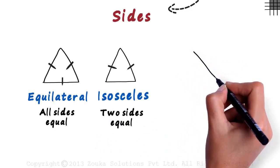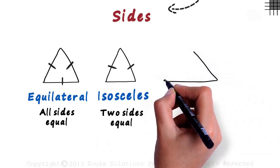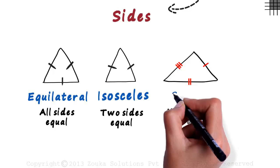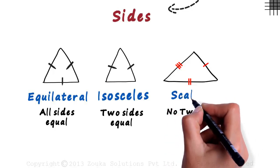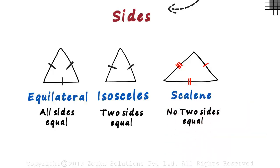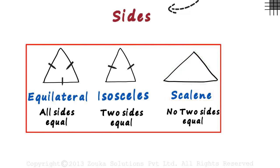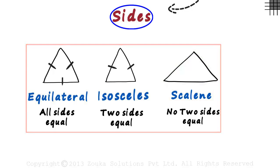The third type of triangle is the one in which no two sides are equal. Such triangles are called scalene triangles. Remember, the length of each side of the scalene triangle is different from the other. So this was the classification of triangles based on sides.